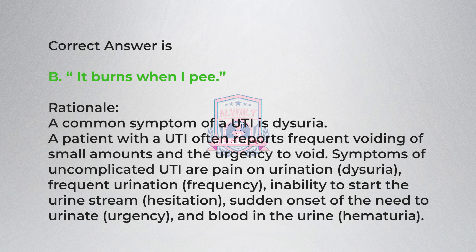Rationale: A common symptom of a UTI is dysuria. A patient with a UTI often reports frequent voiding of small amounts and urgency to void. Symptoms of uncomplicated UTI include dysuria, frequent urination, inability to start the urine stream (hesitancy), sudden onset of the urge to urinate (urgency), and blood in the urine (hematuria).